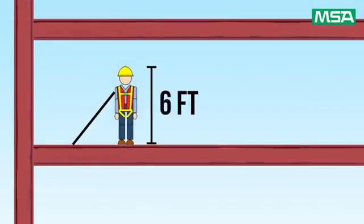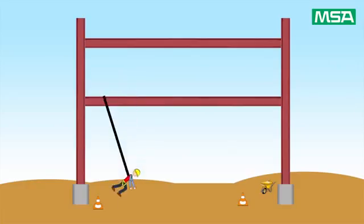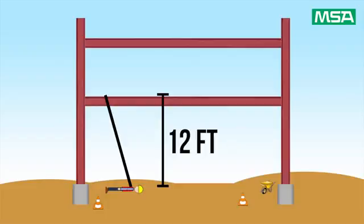Bob is a six-foot worker who's tied off at the feet with a six-foot lanyard. The overall distance from ground to anchor point is only a total of 12 feet, resulting in Bob's misfortune.